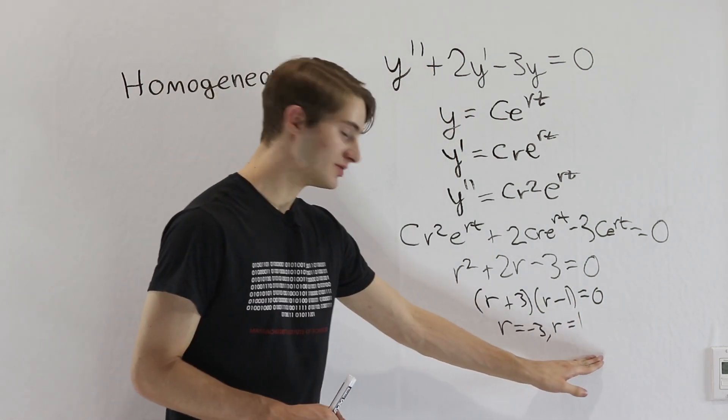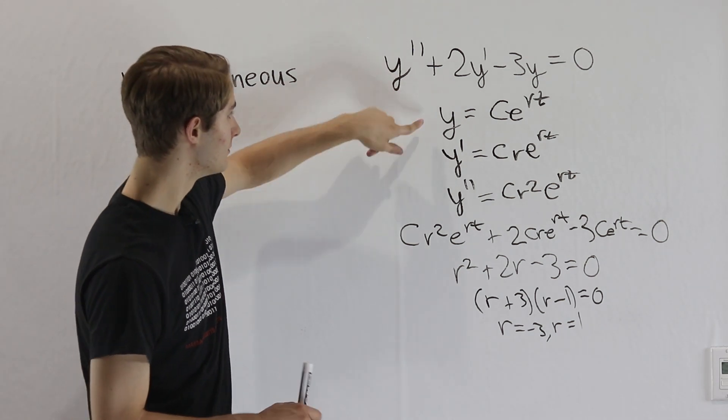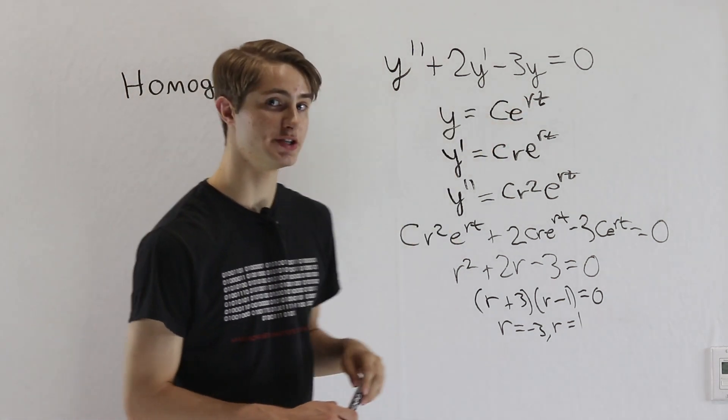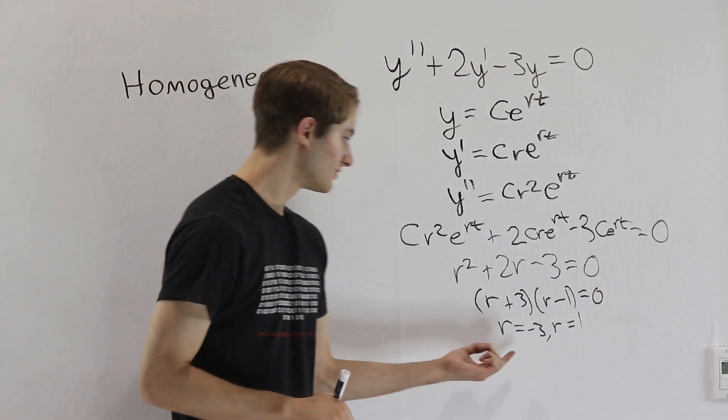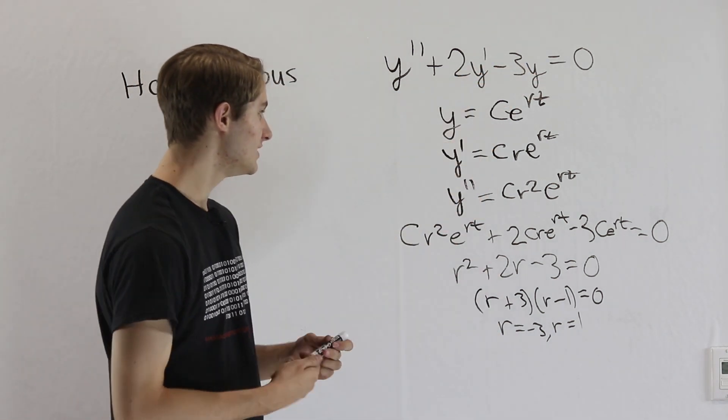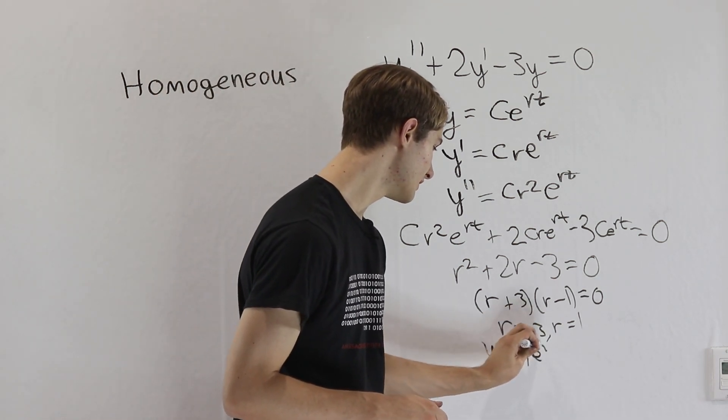So what are these telling us? Well, if we go back to our original function here, we know that y equals c e to the rt has to satisfy this differential equation here, which means that if we do y equals c e to the negative 3t, we'll call that c1, e to the negative 3t.